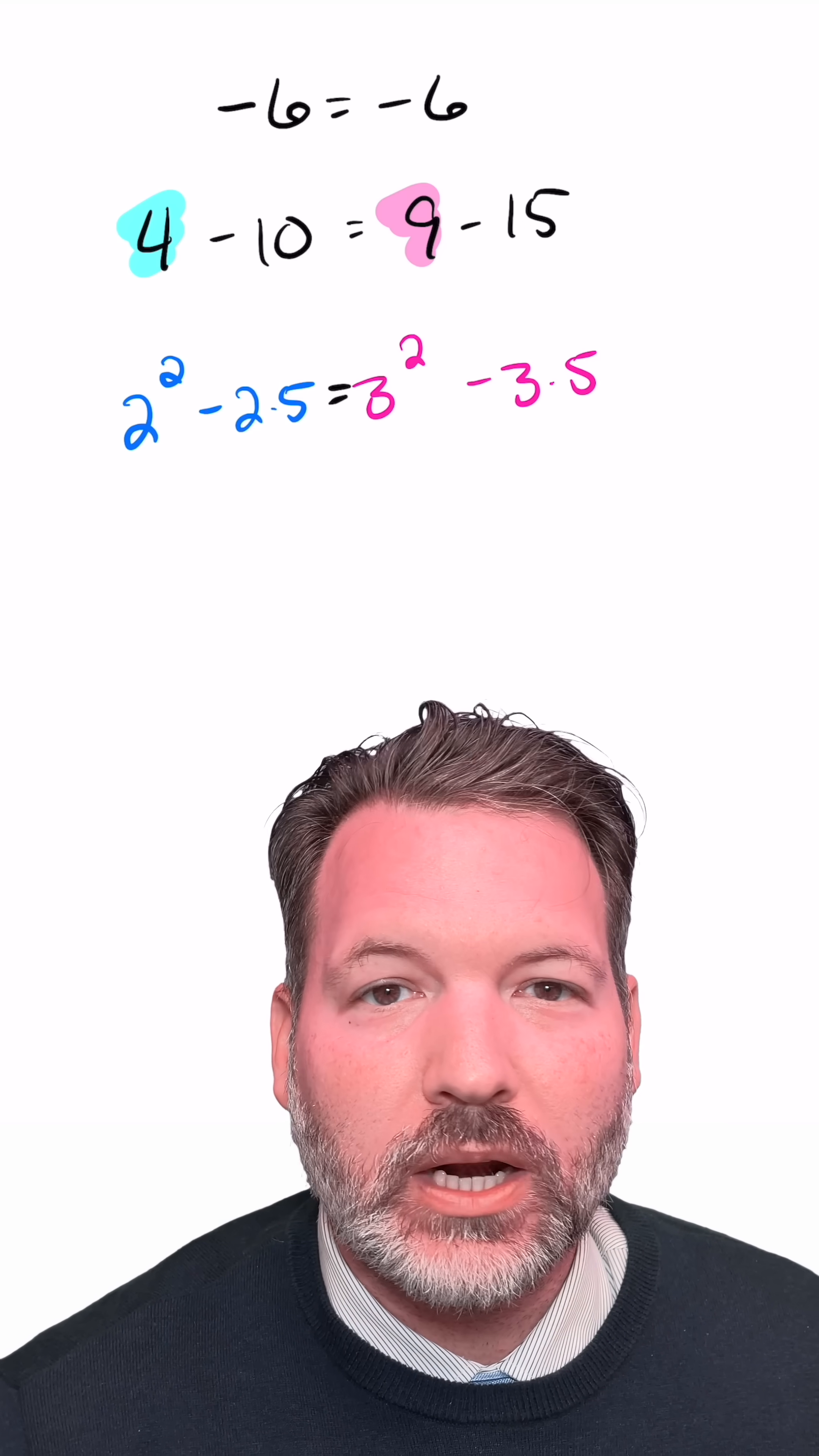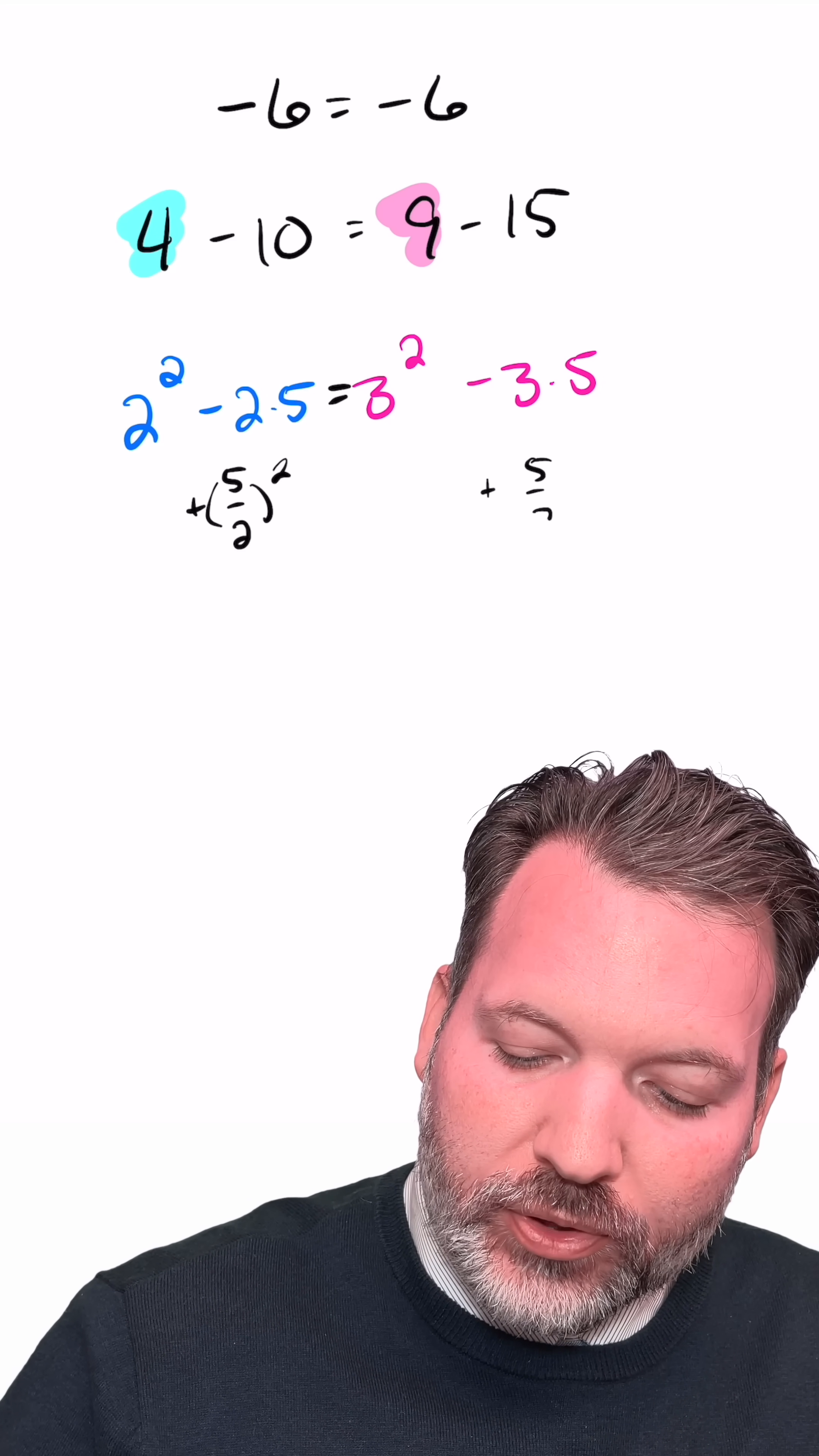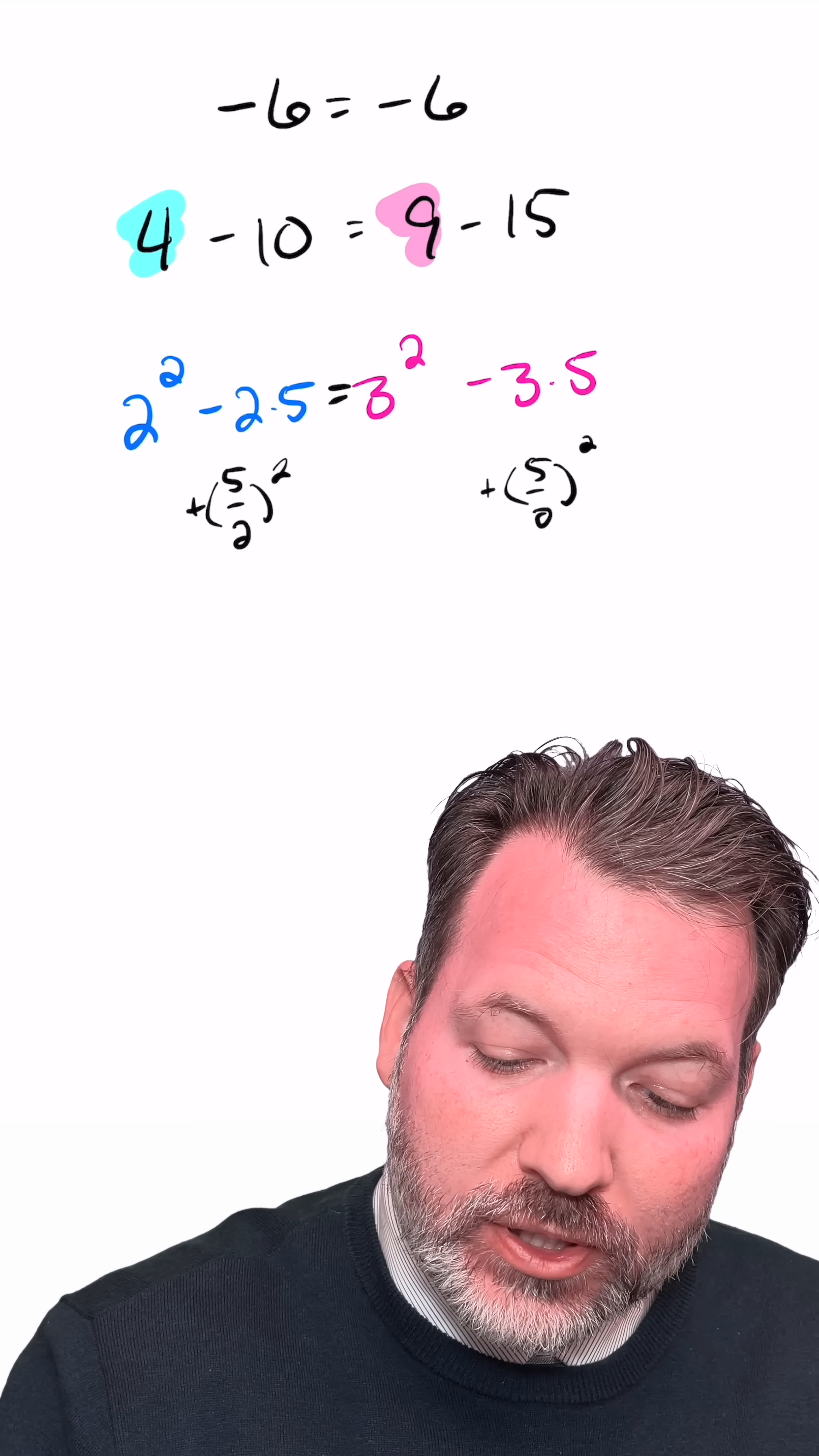Now, this next step is going to look a little bit weird, but what I want to do is I want to add 5 halves squared to both sides of this equation. And again, I should be allowed to do that, right? I can add the same thing to both sides of an equation.